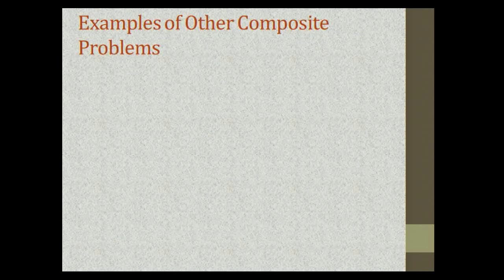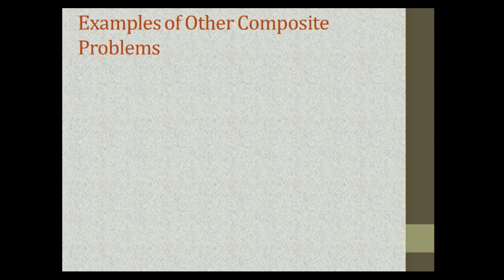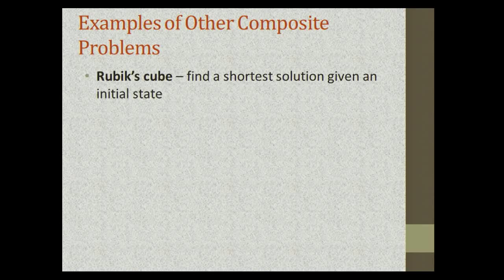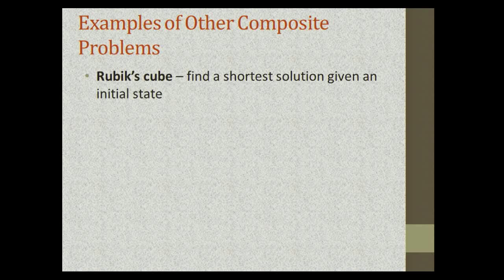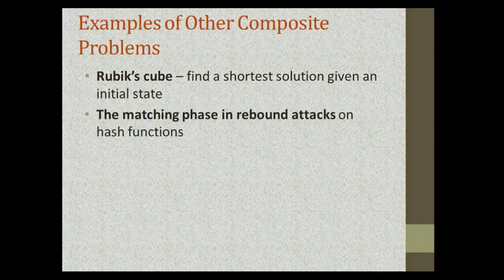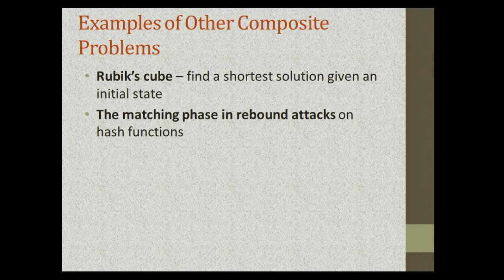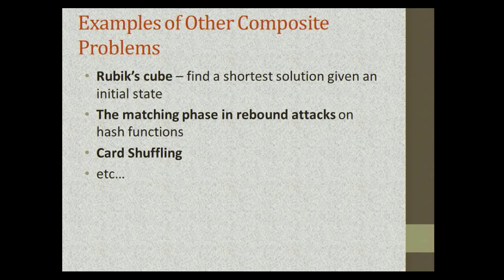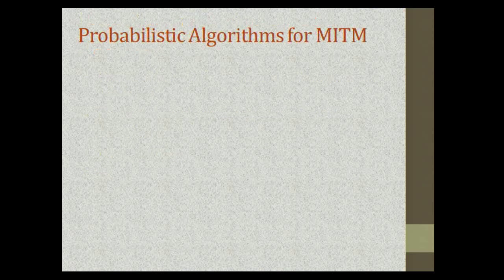Knapsack is one composite problem to which we can apply our techniques, but there are others. One classical problem is Rubik's cube. Another is the matching phase in rebound attacks, and perhaps most relevantly, card shuffling, along with many more.